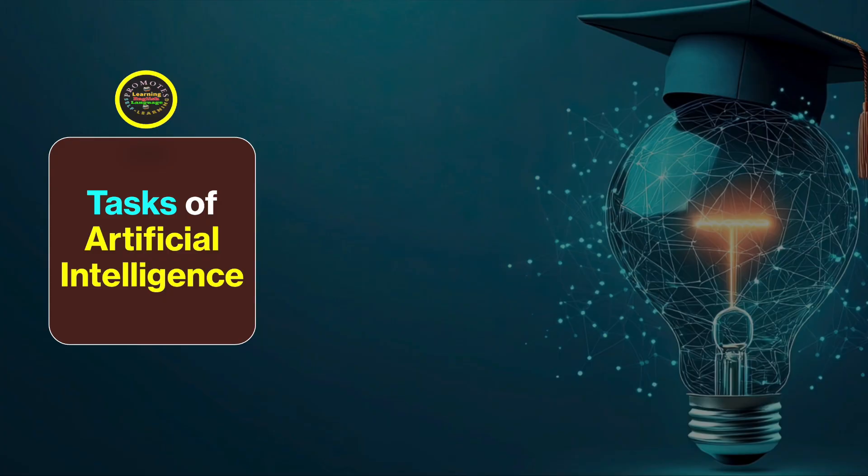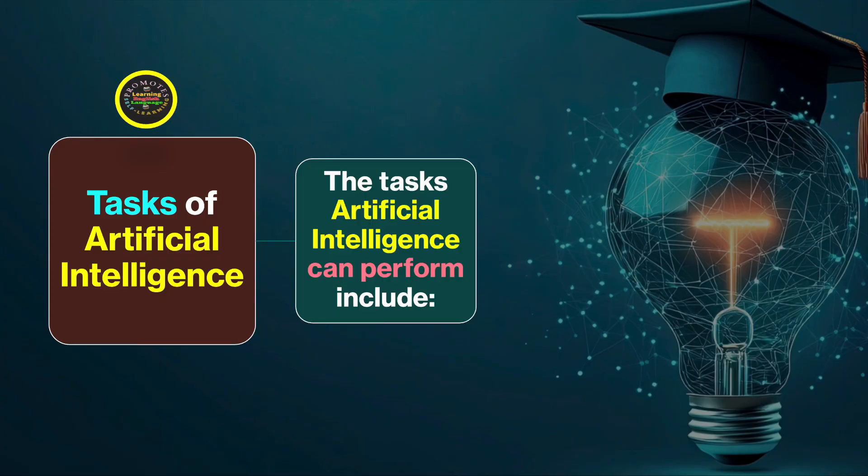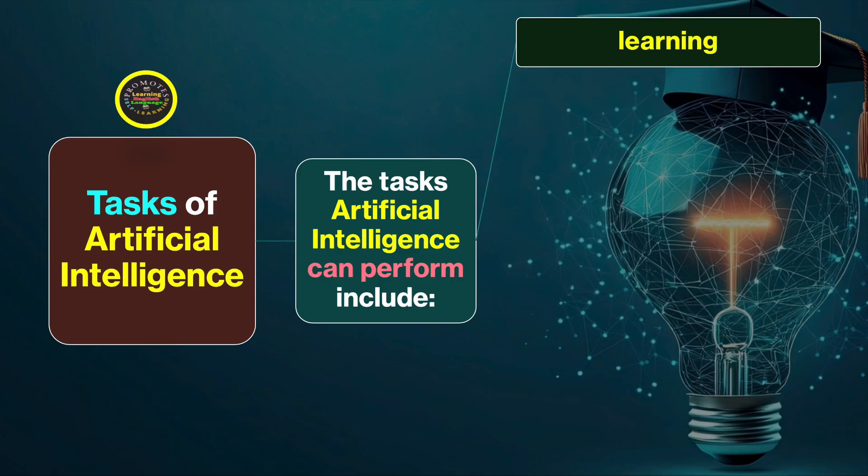The tasks artificial intelligence can perform include learning. Artificial intelligence can learn quickly about so many things and in the ways in which it is designed to perform. Then we have reasoning. Artificial intelligence has the capability to reason, to analyze, to come to logical conclusions.